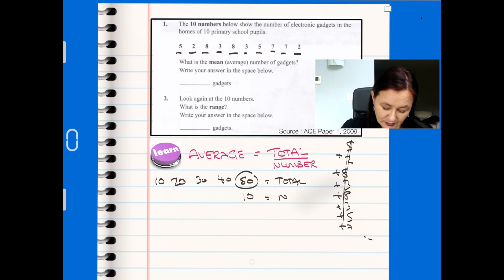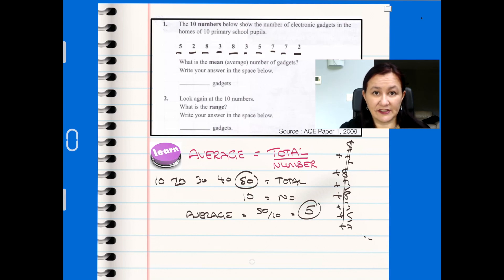And then we've got the number, but we're told, and we can also add, that the number is 10. So that's straightforward. So in this case then we just have the average is 50 over 10, which is 5. And that's all there is to it.